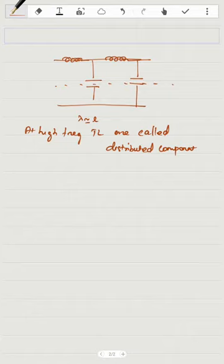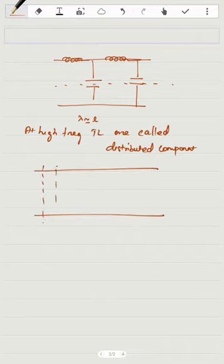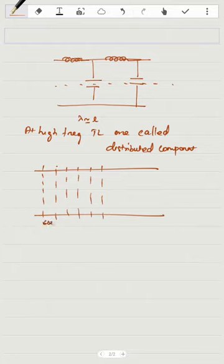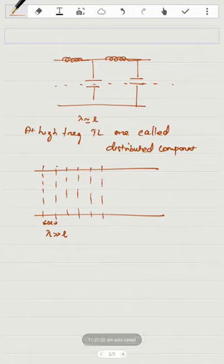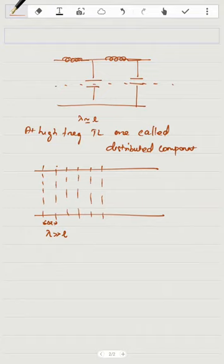To solve this problem, we can approach it by dividing the longer transmission line into shorter uniform sections of length delta-z. For each small section, we assume the wavelength is greater than the physical length of that section, so the transit time effect can be neglected. We can then safely apply circuit theory principles to find the voltage and current for each section, and extend this to the entire line. This is how we go from a distributed component to a lumped element approach.